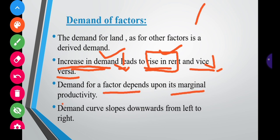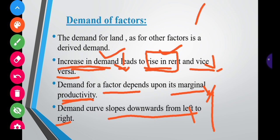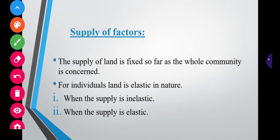The demand for a factor depends upon its marginal productivity. There is a direct relationship between the demand for a factor and its marginal productivity. The demand curve slopes downward from left to right. On the vertical axis (OY) we measure rent, and on the horizontal axis we have the demand for land. With high rent, people demand less land, and with low rent, people demand more — the law of demand applies here.